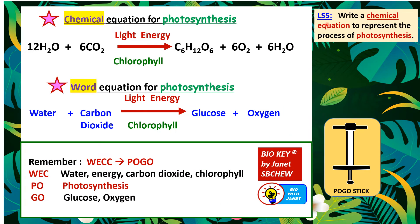For learning standard number 5, we need to write a chemical equation for photosynthesis. The equation is: 12H₂O + 6CO₂, using light energy absorbed by chlorophyll, produces C₆H₁₂O₆ (glucose) + 6O₂ + 6H₂O. It must be a balanced equation with the same number of each type of atom on both sides. Note that water is both used and produced — water is produced when photolysis of water occurs, when the water molecule is split into hydrogen and hydroxide ions.